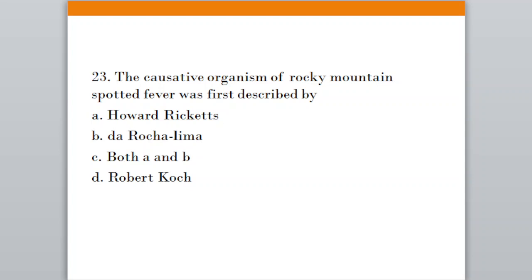Question number twenty-three: The causative organism of Rocky Mountain spotted fever was first described by. Option A, Howard Ricketts; Option B, De Rocha Lima; Option C, both A and B; Option D, Robert Koch. The correct answer is option C — Howard Ricketts and De Rocha Lima, both A and B.